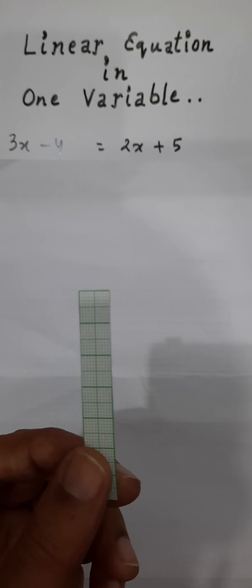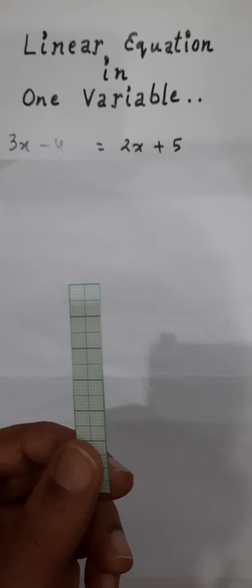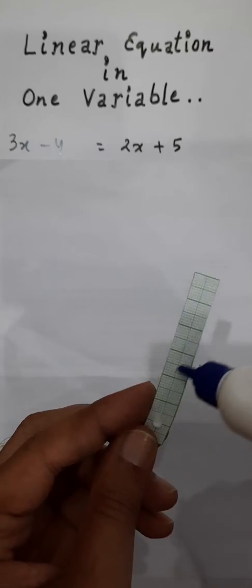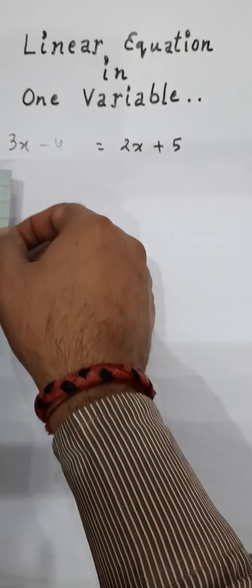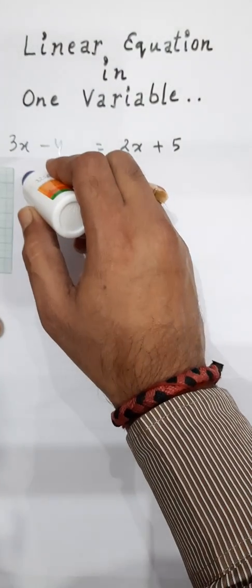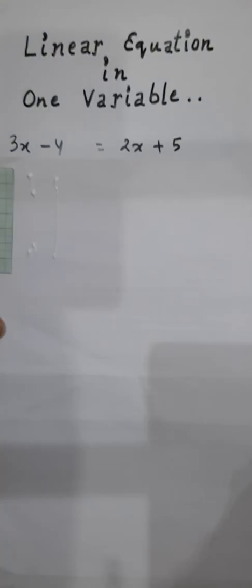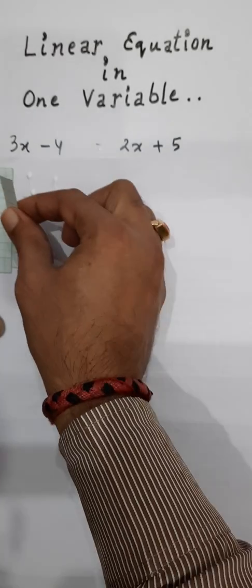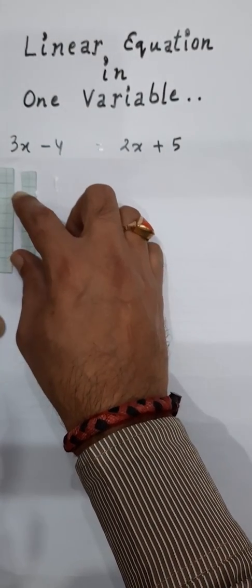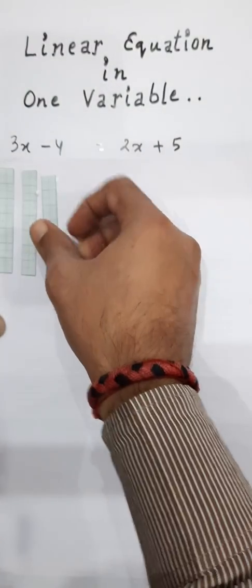In LHS, you are observing that it is 3x, which means that you require 3 rectangular graphs. So here I have pasted 1, then I have pasted the 2nd one, and this is the 3rd one. In this way, I have got 3x.